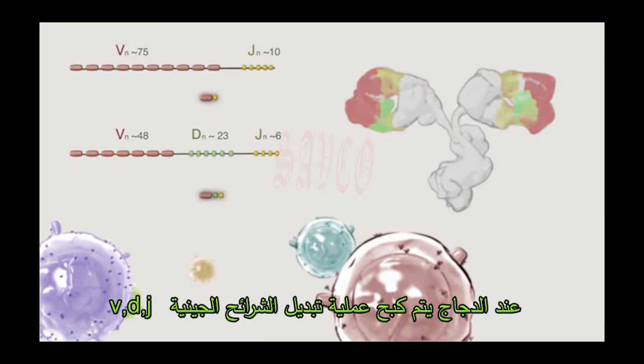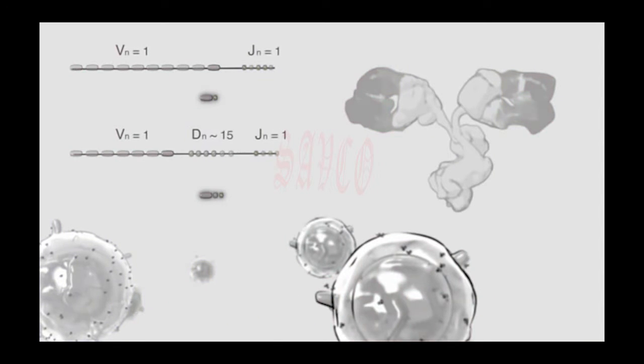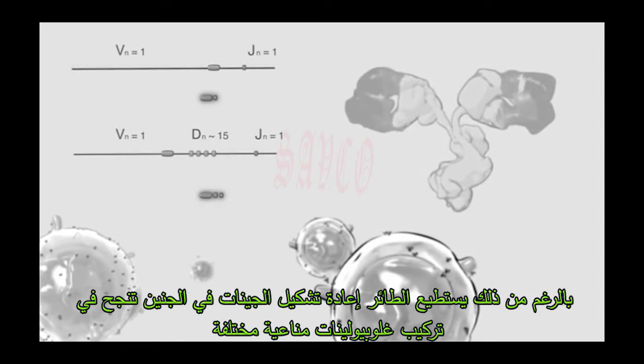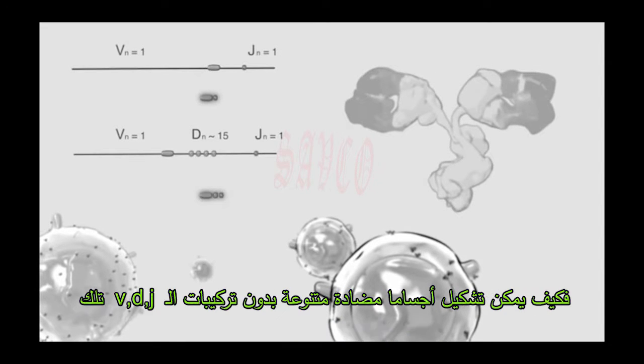Chickens, however, lack this multitude of VDJ gene segments to draw upon. So even though gene rearrangement in avian embryos does succeed in the expression of immunoglobulins, without the varied VDJ combinations, how do they generate their antibody diversity?